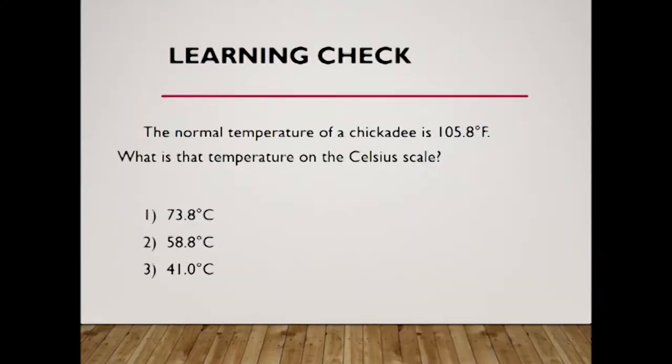Let's see another example. The normal temperature of TKD is 105.8 degrees Fahrenheit. What's the temperature in Celsius? The options are: 1) 73.8, 2) 58.2, 3) 41.0. Before you move on, pause your video, try to calculate, and then check if your answer is correct.